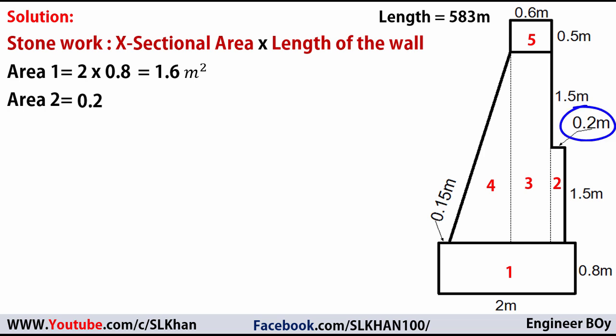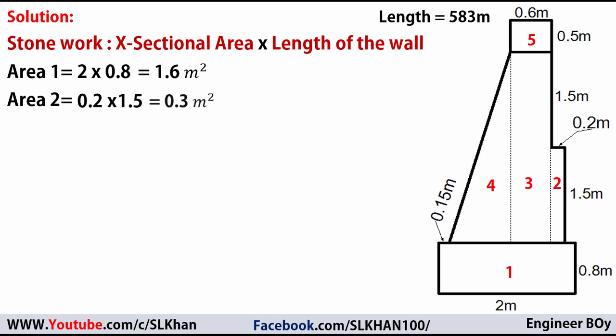Shape 2 is also a rectangle: 0.2 meters times 1.5 meters equals 0.3 square meters. Shape 3's base times depth gives its area as well — 0.6 meters times 3 meters equals 1.8 square meters.